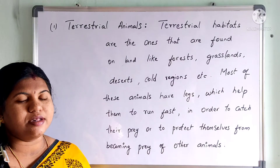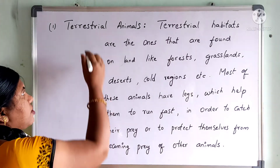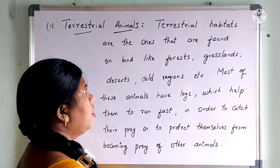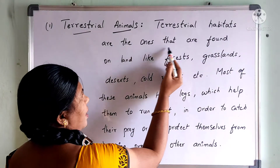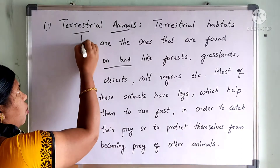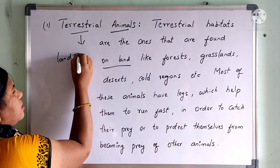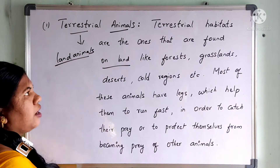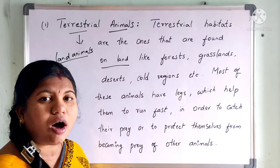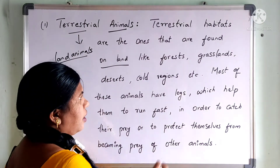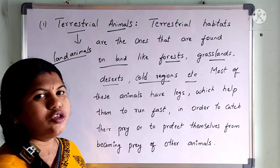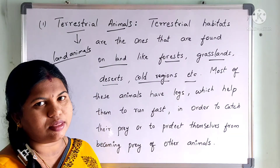Let us discuss our first category — terrestrial animals. Terrestrial habitats are the ones found on land. Terrestrial animals are also called land animals because they live on land. On land there are many kinds of places like forests, grasslands, deserts, cold regions, etc.